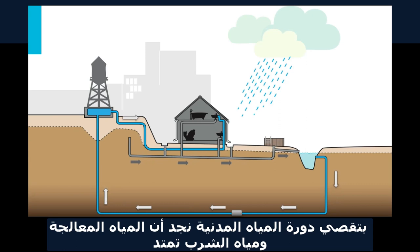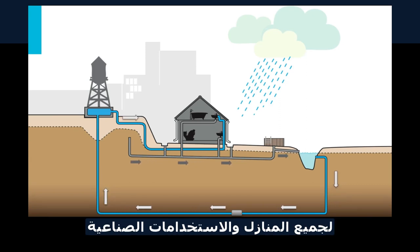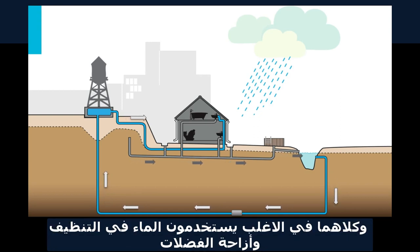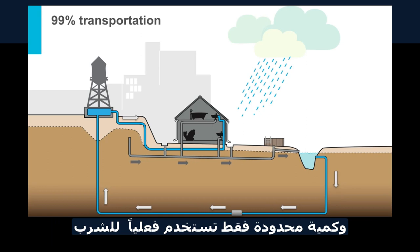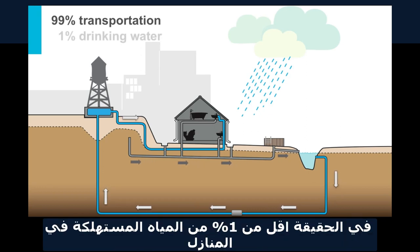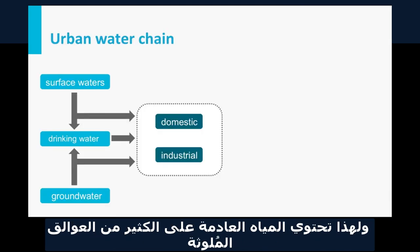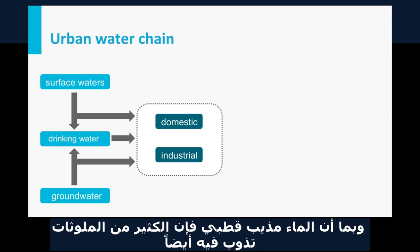Following the urban water chain, the treated and distributed drinking water finds its way to all households and industrial appliances. At both uses, water is generally used for cleaning or transport of waste products, and only a very limited amount is actually used for drinking — in fact, less than 1% of the water supplied to households. Therefore, the used waters contain many suspended pollutants and, because water is a polar solvent, many pollutants will also dissolve in the water.